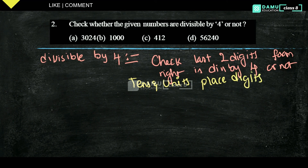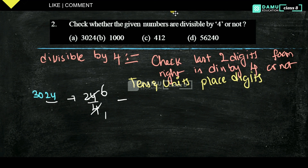Let's take 3024. The last 2 digits are 24. Is 24 divisible by 4? Yes, 4 × 6 = 24. So 3024 is divisible by 4.